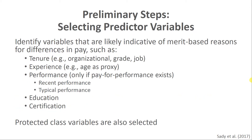When selecting predictor variables, we want to do this specific to each employee grouping identified. Typically, we'll include tenure — both organizational tenure and job tenure — and potentially tenure in the pay grade as well. We also want to include experience, and age can often be used as an experience proxy, meaning a variable that is likely to indicate the level of another variable. We can also include performance, though typically only if the organization has a pay-for-performance program in place, focusing on recent performance, typical performance, or both.